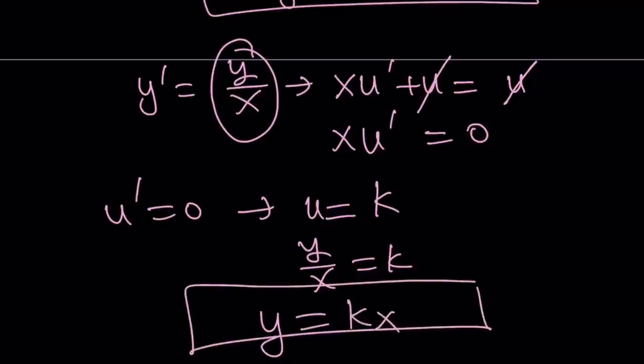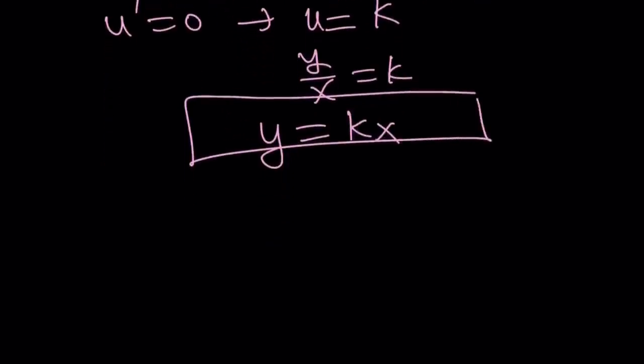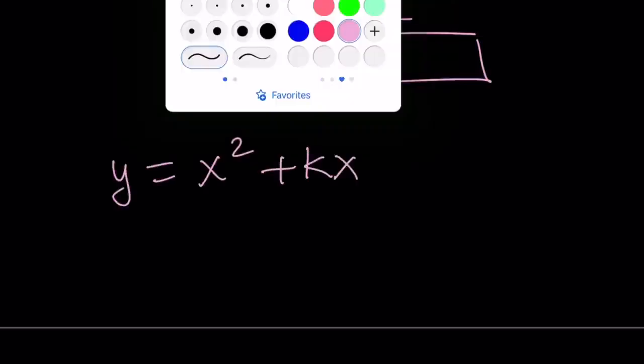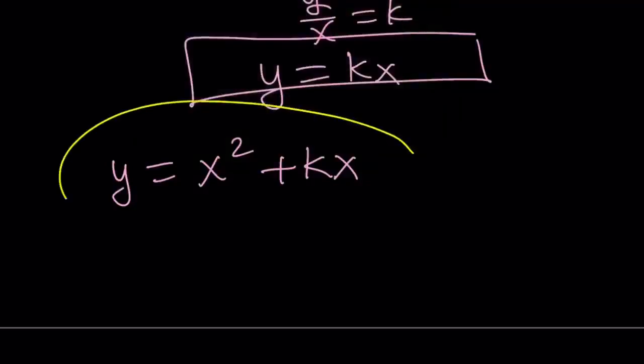Now, that gives us the homogeneous solution, and then if you put it together with the first method to find the particular solution, then you will obtain y equals x squared plus kx as before. And this brings us to the end of this video. Well, thank you for watching. I hope you enjoyed it. Please let me know. Don't forget to comment, like, and subscribe. I'll see you tomorrow with another video. Until then, be safe, take care, and bye-bye.